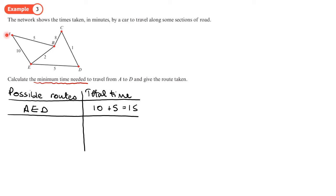Another route that I could take would be A, E, B, C, D. So A to E, E to B, B to C, and C to D. Let's add those out, so A to E is 10, E to B is 2, B to C is 8, C to D is 1, so that gives a total time of 21. So these total times are in minutes.